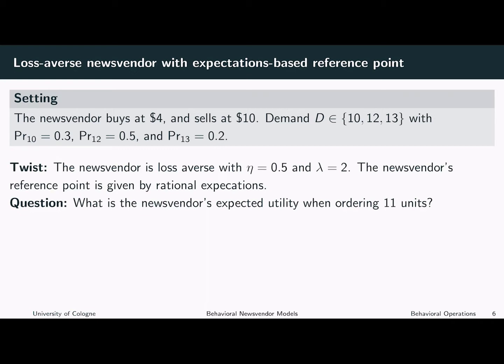Let us start with the utility. When ordering 11 units, we again have to distinguish two cases. The first case, which occurs with a probability of 30 percent, is that the demand is just 10. From before, we know that when ordering 11 units and having a demand of 10, the profit of the news vendor is given by 56.